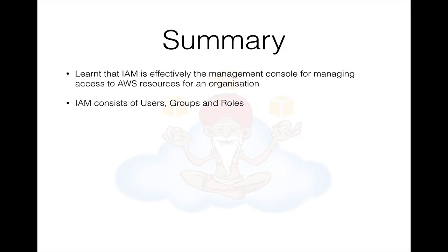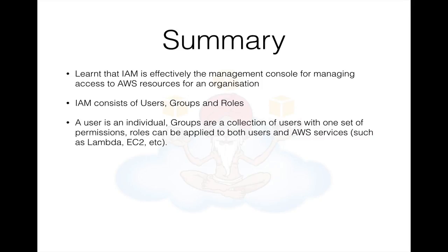We learnt that IAM consists of users, groups, and roles. We learnt the difference between those three things: a user is an individual, a group is a collection of users with one set of permissions, and roles can be applied to both users and AWS services such as Lambda or EC2. We also created a new role which would allow our EC2 instances to talk to our S3 buckets.